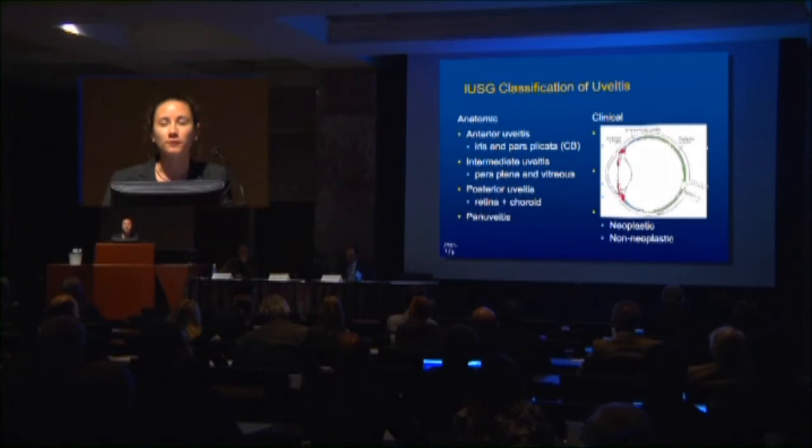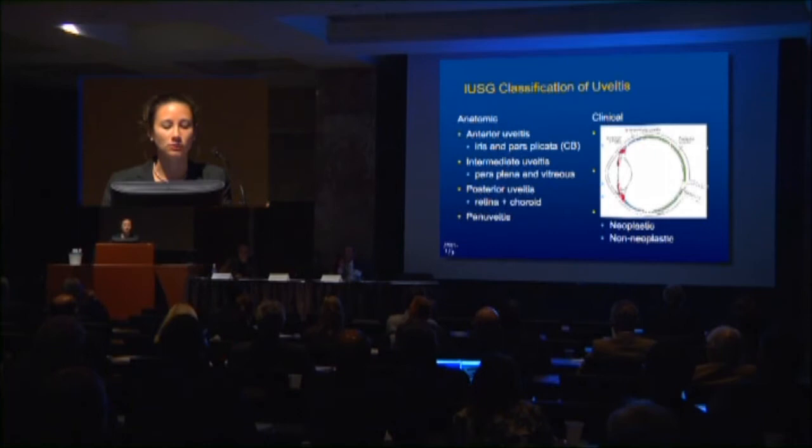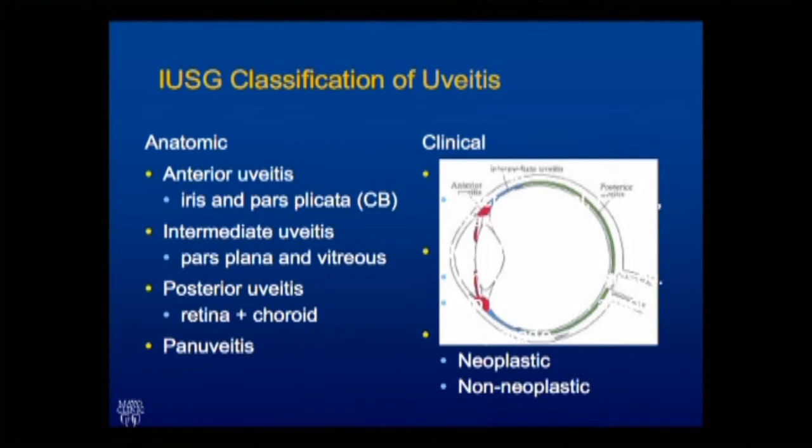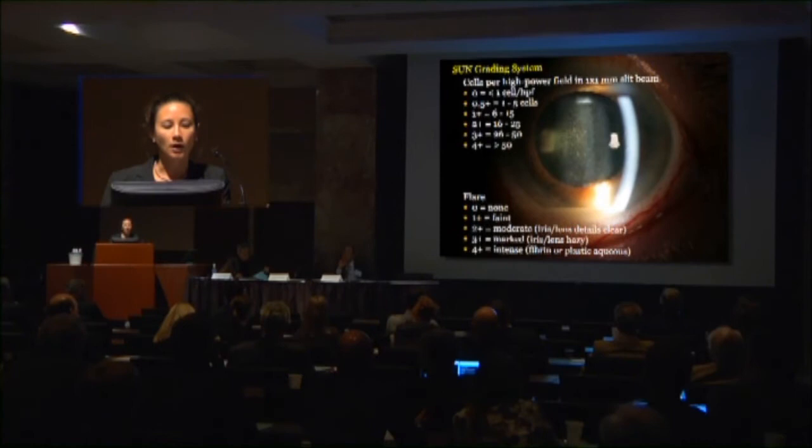When we think about uveitis, it's important to know that a group of uveitis specialists back in 1978 got together and formed the International Uveitis Study Group and agreed on ways to describe and classify uveitis — both anatomically with anterior, intermediate, posterior, and pan, depending on where the inflammation is present — and also clinically as either infectious, non-infectious, or as a masquerade.